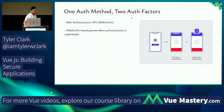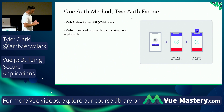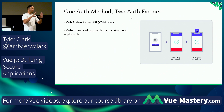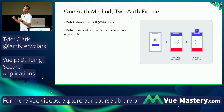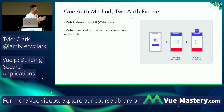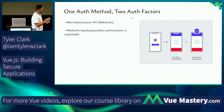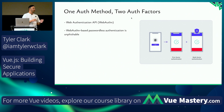WebAuthn is short for the Web Authentication API. How many people know websites where you give your email or username and then your computer pops up asking for your fingerprint to sign in? That's WebAuthn. Using biometrics for your application is WebAuthn — it's a passwordless authentication you can add to your application.